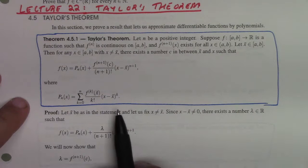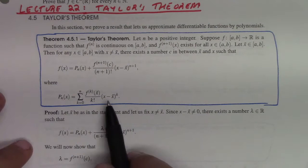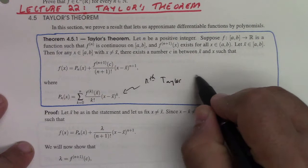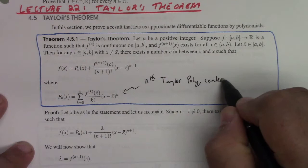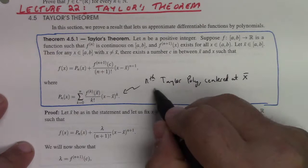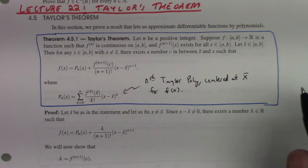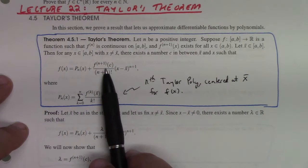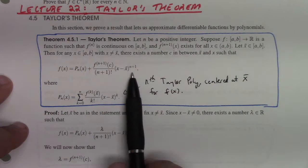Here p_n denotes the nth Taylor polynomial centered at x-bar. What this theorem is saying is that you can write any function as the nth Taylor polynomial plus a remainder term, which equals the value of the next derivative divided by (n+1) factorial times the (n+1)th power function centered at x-bar. That's pretty neat.